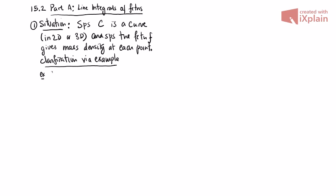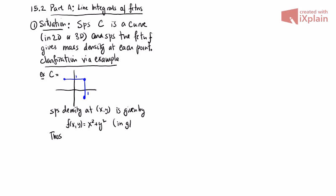Clarification via an example. Suppose C is this curve right here. So this is our C. And suppose the density of x comma y, suppose this is given by f of x, y equals x squared plus y squared. So what that means is this density, for example, we could say maybe in grams per centimeter. So what this means is, for example, at say 1 comma 1, the density is f of 1 comma 1, which is 2 grams per centimeters.